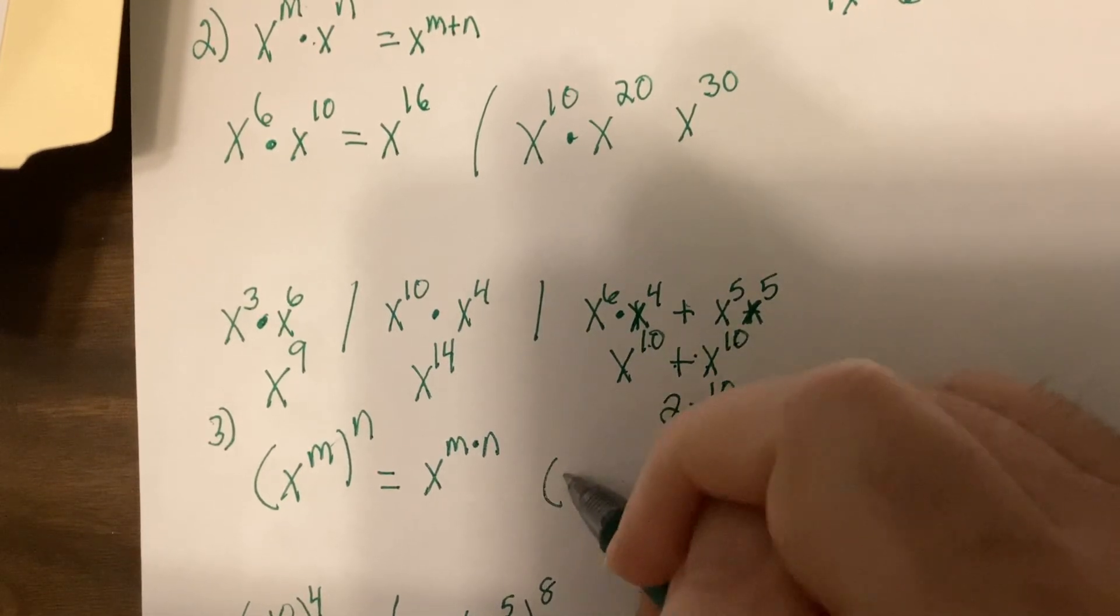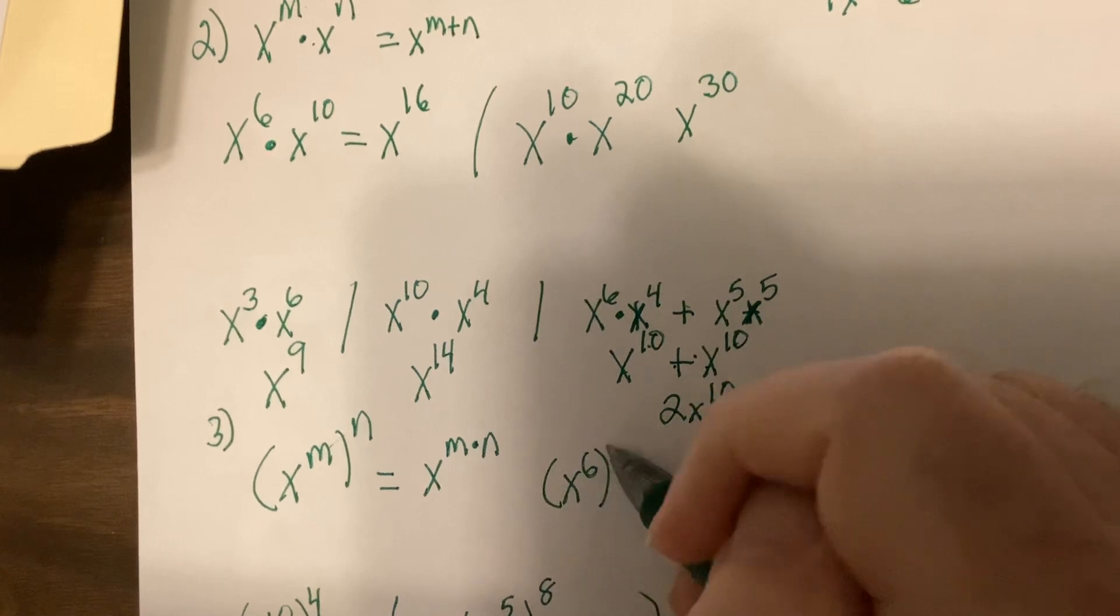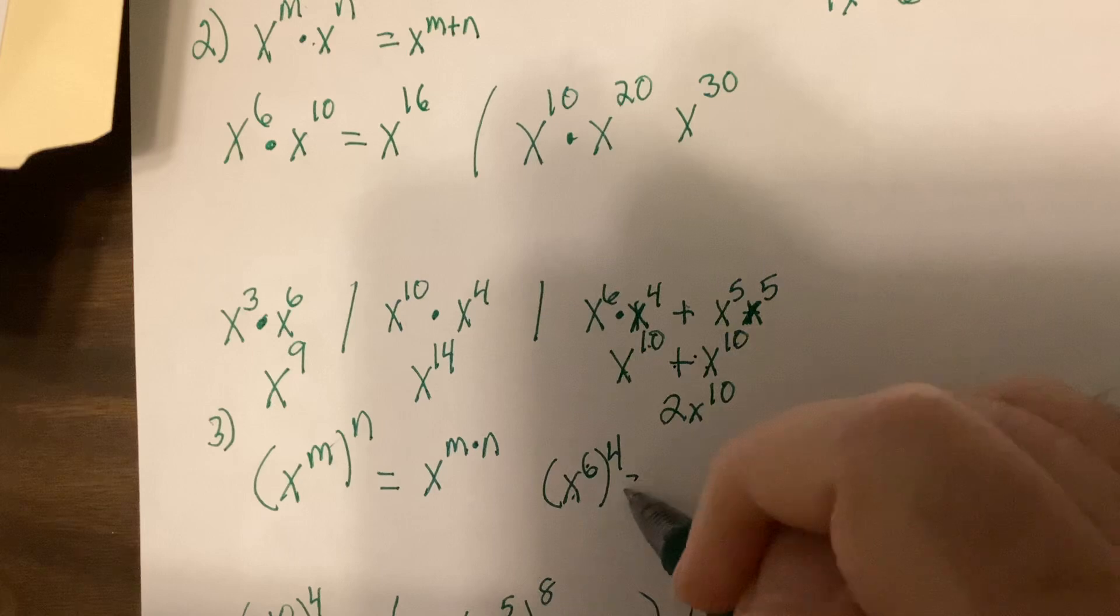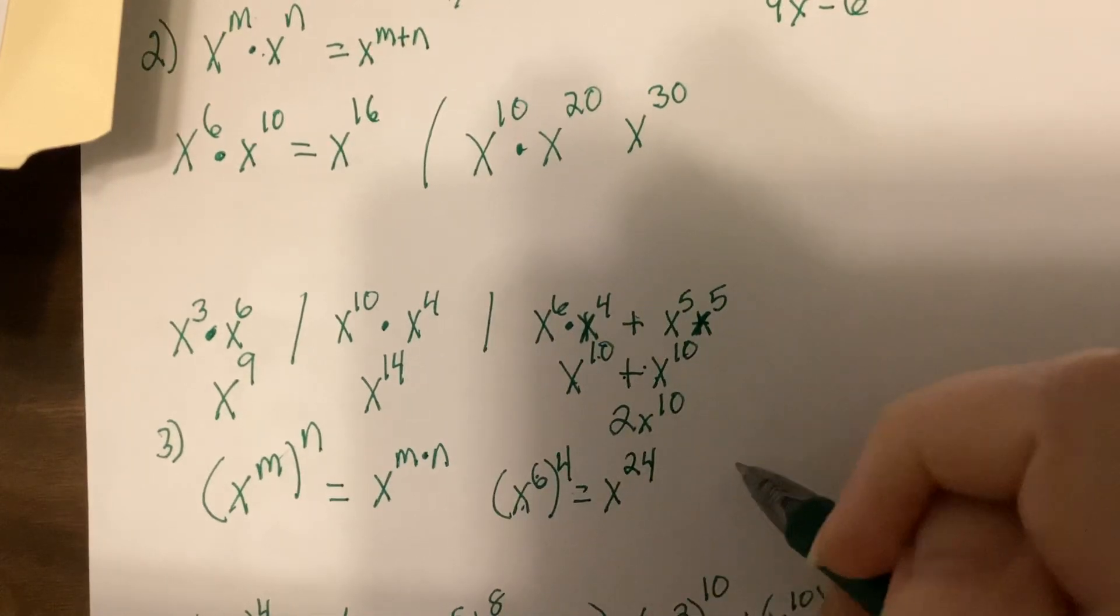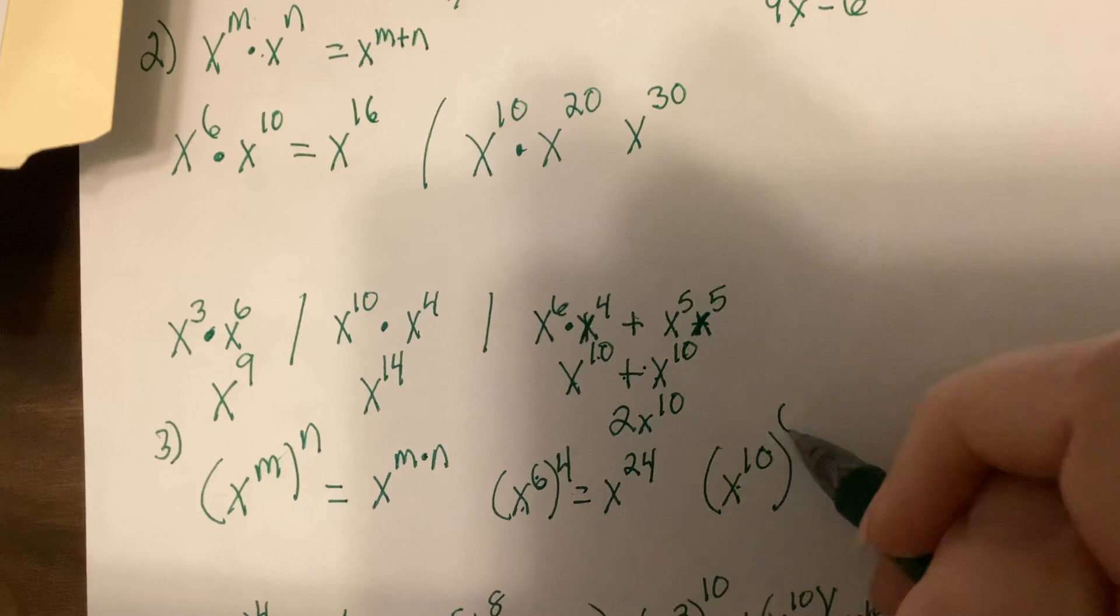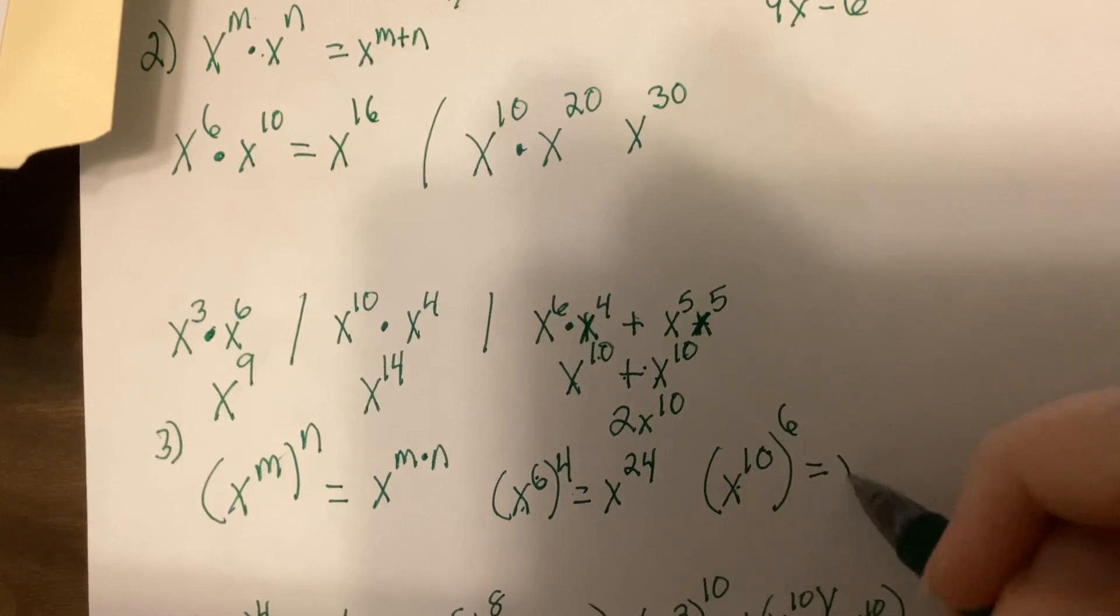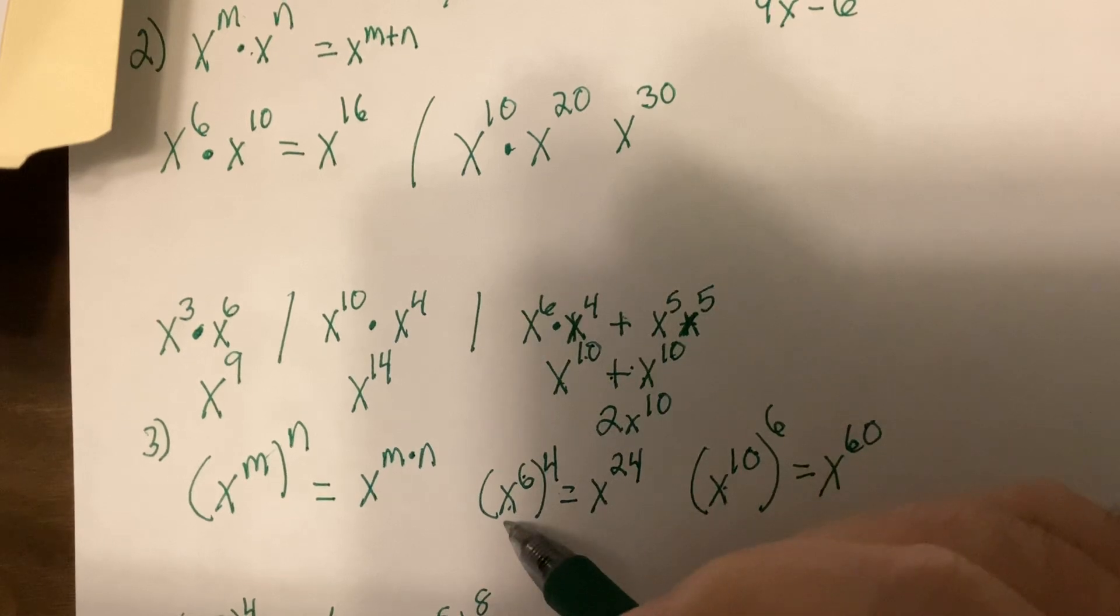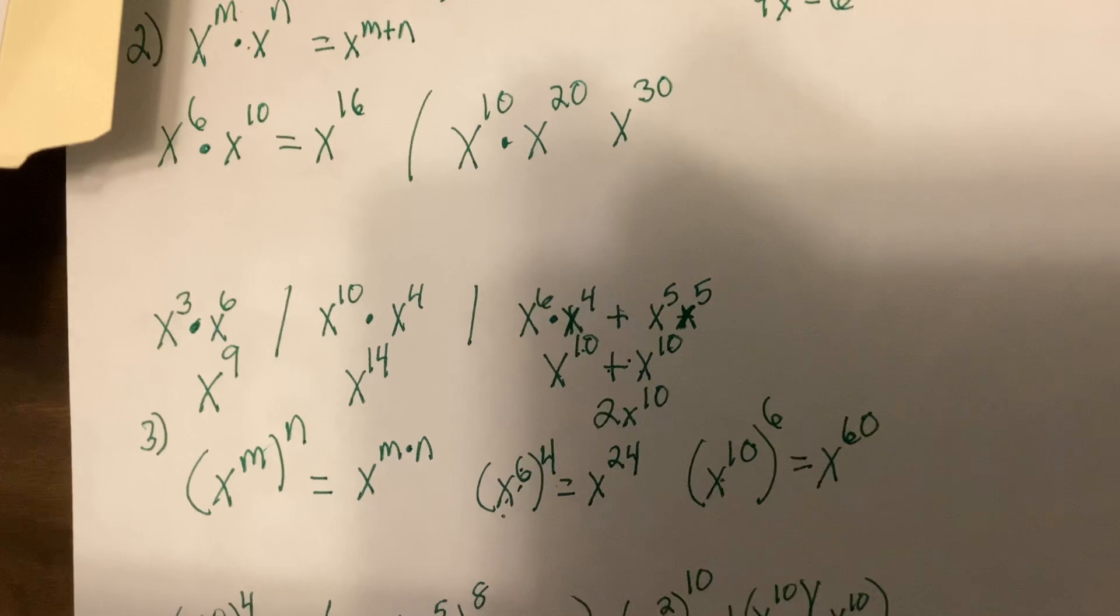So, if I have X to the 6th to the 4th, base to a power, raise it to another power, you multiply the powers. X to the 10th power to the 6th power, you multiply the powers. So, when you have a base to a power, and you raise it to another power, you multiply the powers.